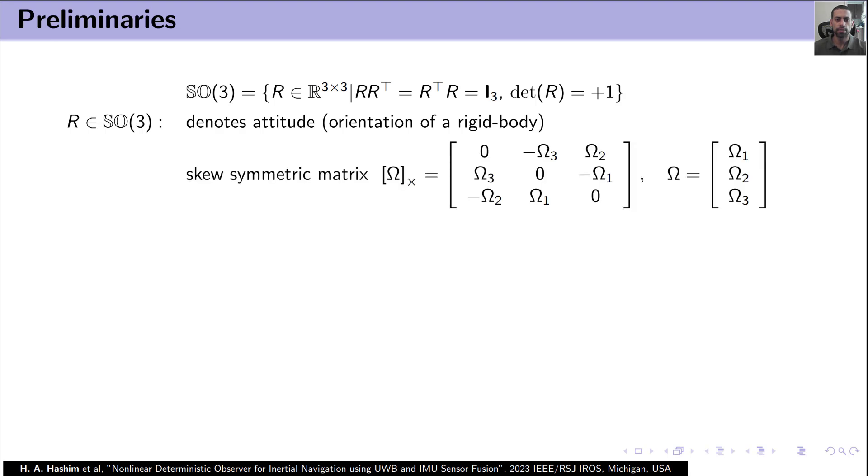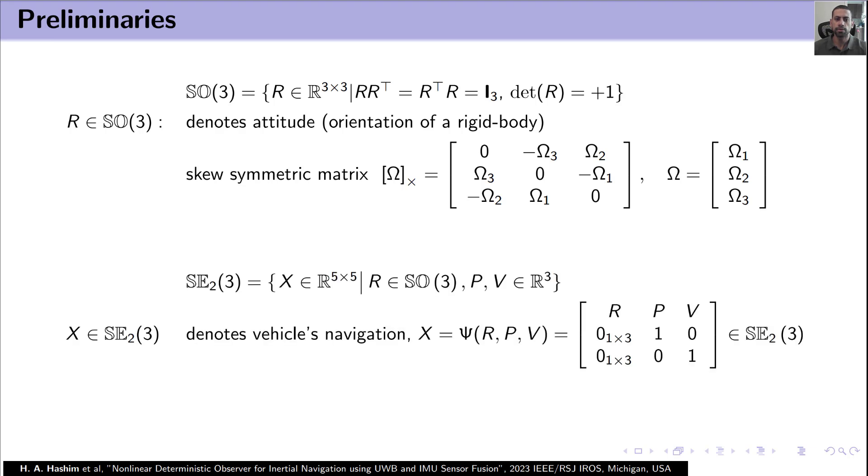This is a definition of a skew symmetric matrix, and X belongs to SE_2(3). This refers to the vehicle navigation matrix, and the vehicle navigation matrix includes orientation R, position P, and linear velocity V.